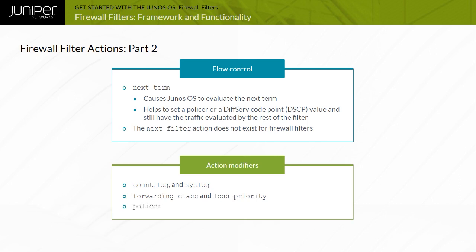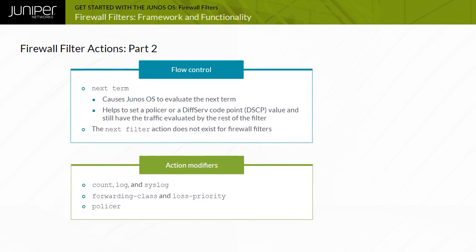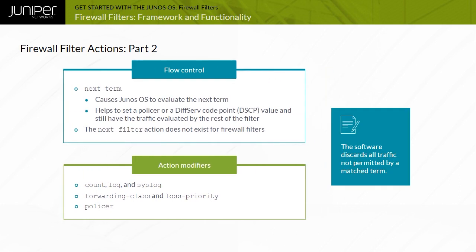The forwarding class and loss priority action modifiers are used to specify class of service (COS) information. The Policer action modifier allows you to invoke a traffic policer. Note that traffic not matching a term with an explicit or implicit accept action will be discarded, even if it does not match any term with a discard action.